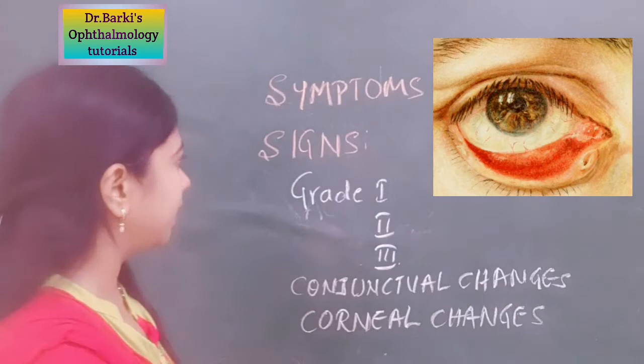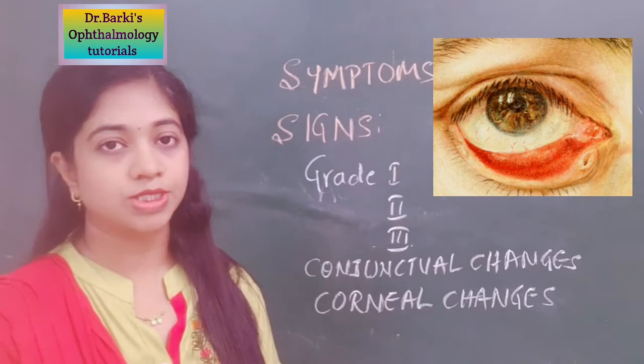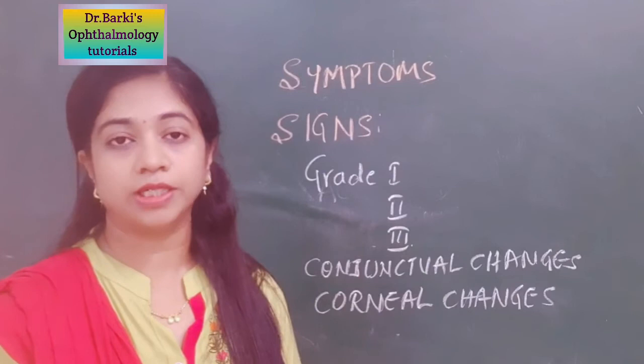Along with these changes of ectropion, there are few changes in the conjunctiva as well. The conjunctiva looks red and velvety in appearance. There can even be keratinization and thickening of the conjunctiva. Along with that, corneal changes can also be seen if there is exposure ectropion — that is, in chronic ectropion where the eyelids are not able to oppose and protect the anterior surface, leading to exposure keratitis.